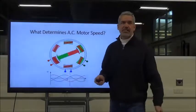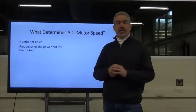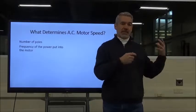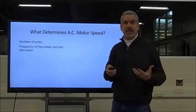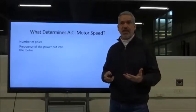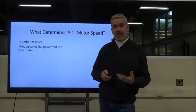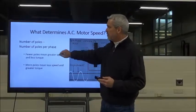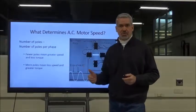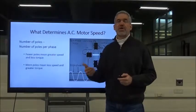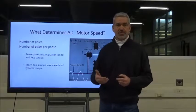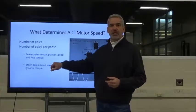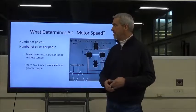What determines the speed of an AC motor? There are two factors: the number of poles in the motor, and the frequency of the power applied. In the United States, that frequency is 60 hertz. Regarding poles: fewer poles means faster RPM but less torque, while more poles means slower speed but greater torque.